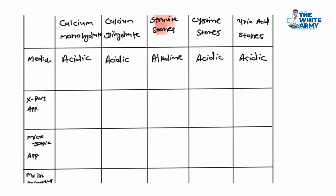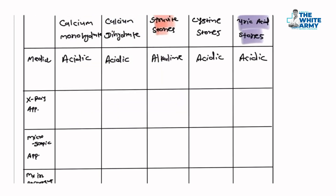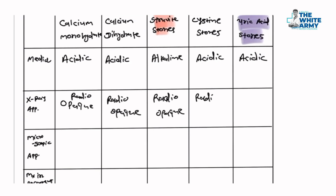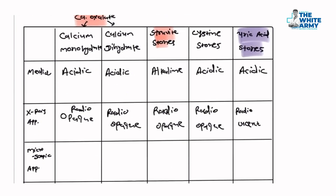For appearance on X-ray: all stones appear radio-opaque on X-ray except uric acid stones. So uric acid stones are radiolucent, while calcium monohydrate, calcium dihydrate, struvite, and cystine stones are all radio-opaque.